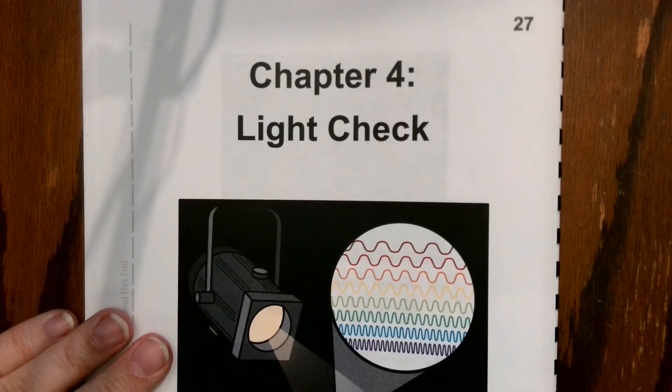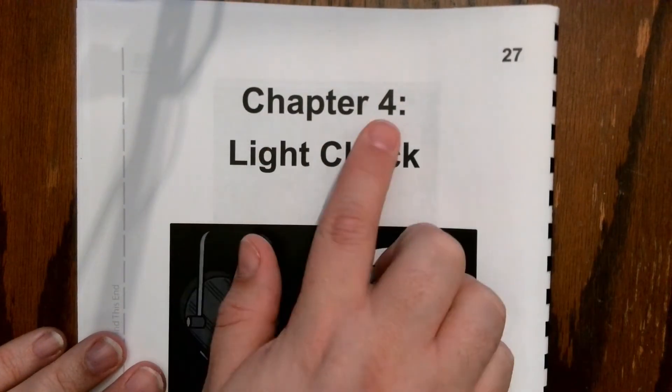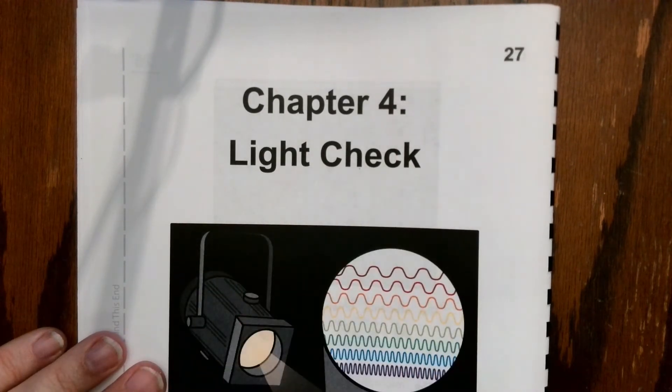Hi, this is Mr. Miller. I'm going to go ahead and we are going to read along with me. I want you to read along with me. We're on page 27, Chapter 4, and the title is called Light Check.